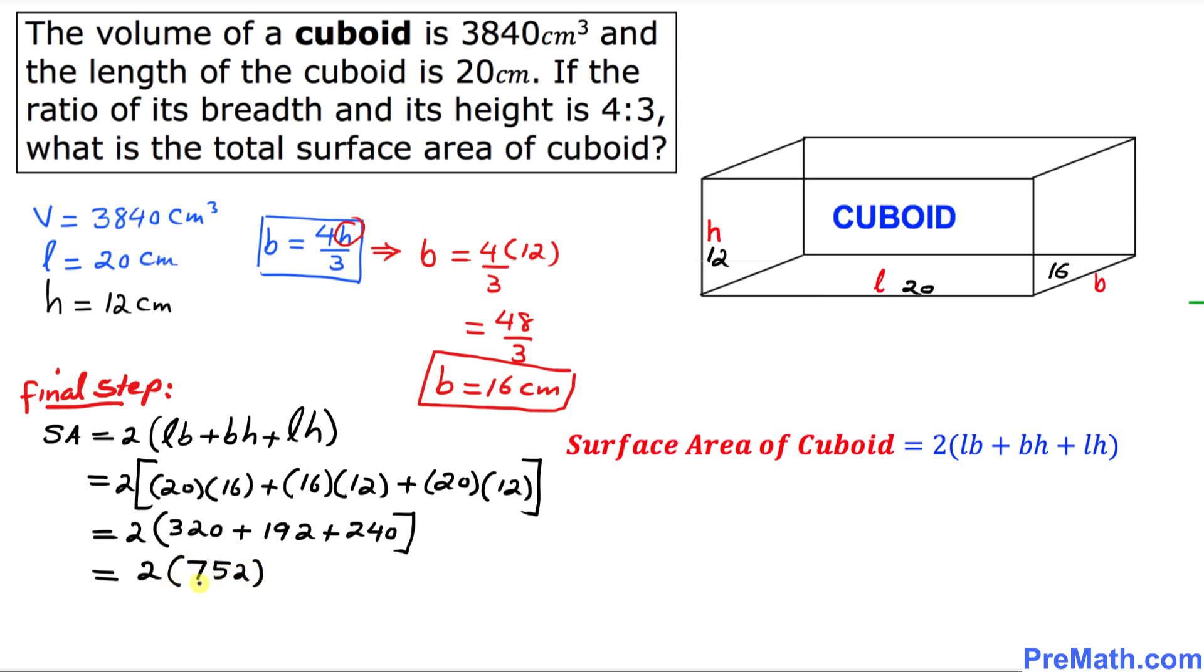So that gives us, that means the surface area, total surface area of this cuboid is going to be 1504 cm². That is our answer.